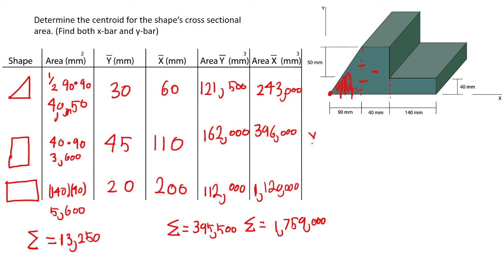So y-bar once again is equal to area times y-bar sum over sum of the areas. So plug in for this, we have area times the y-bar which is right up here. So it's going to be 395,500 over 13,250. It's gonna be millimeters cubed, it's gonna be millimeters squared.